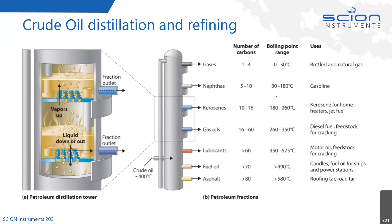Going down the fractions: at the top we get butanes and propanes, then naphthas which go on to become gasolines, then kerosenes and diesels. The heavier lower fractions — heavy fuel oils — go off to vacuum distillation units, fluidized catalytic cracking units, and hydrocrackers, so the refiners can upgrade and blend for gasolines, petrols, and diesels.